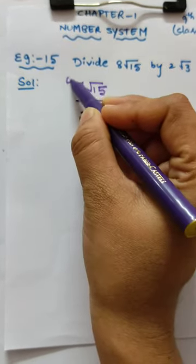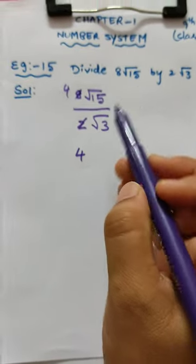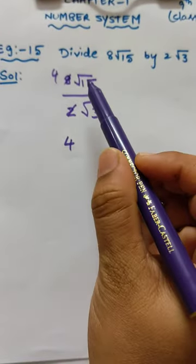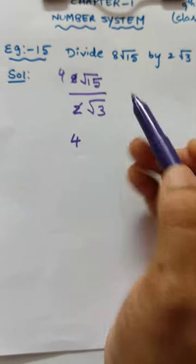2 into 1 is 2, 2 into 4 is 8. Here root 3 is there, here root 15 is there. So here I am writing 3 also, if it will come we can cancel. So 3 times 5, I am writing.